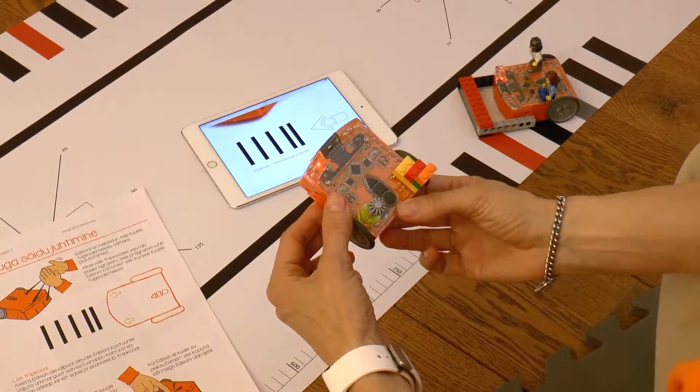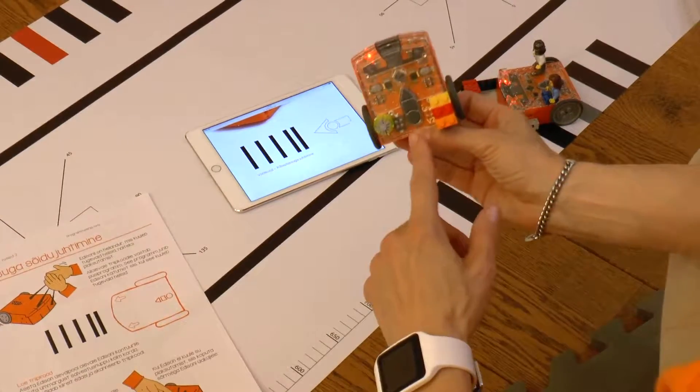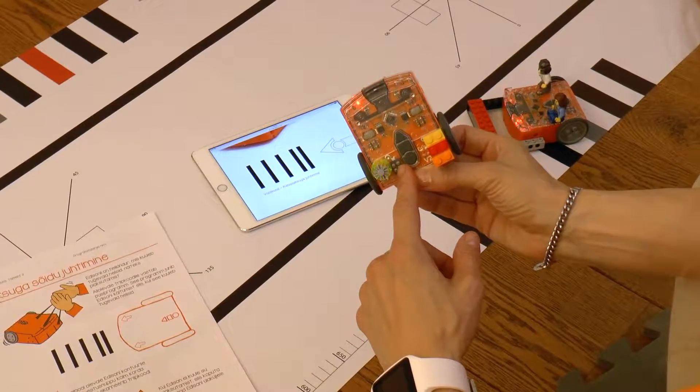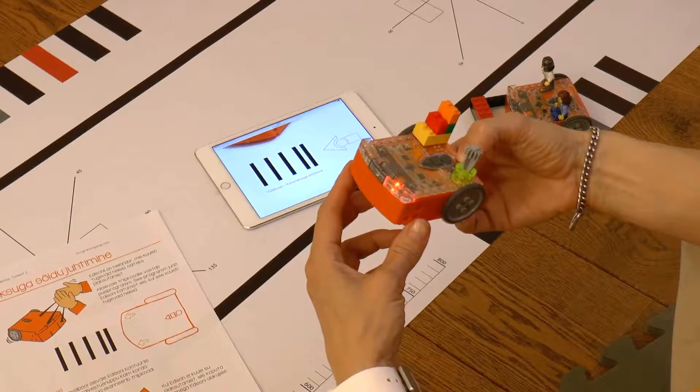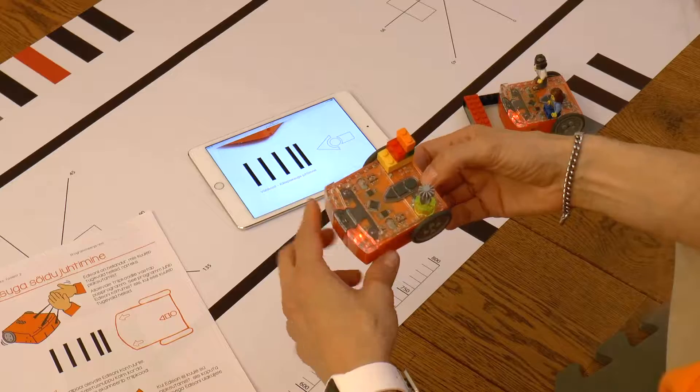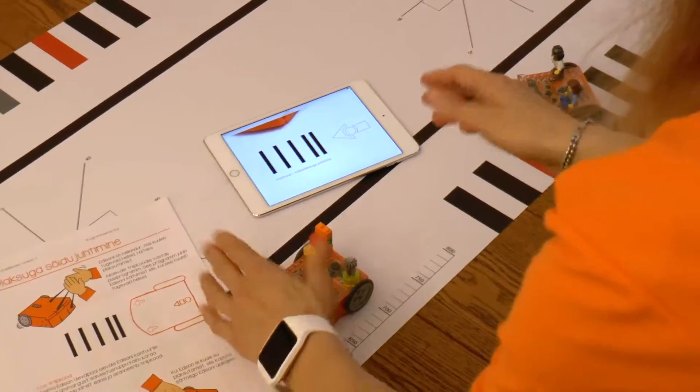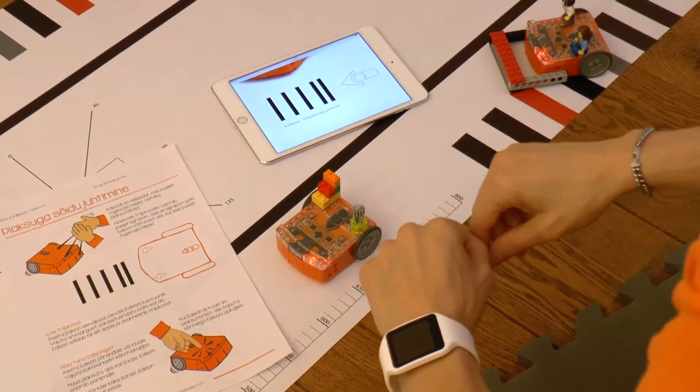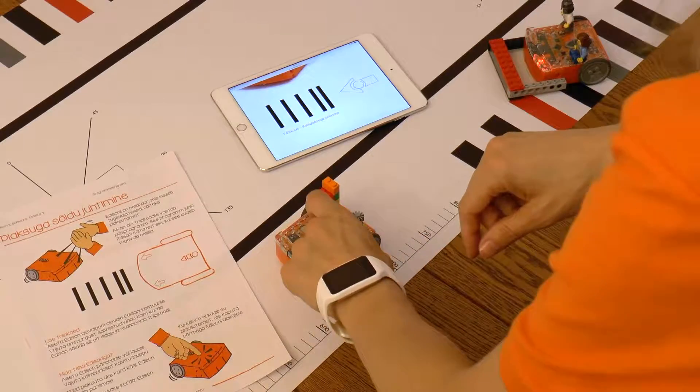As the first thing we will use Edison's hearing, for example its sound sensor, to give it commands by clapping. Its sound sensor is located here. If it's quiet in the room, Edison can hear claps well. If the room is noisy, then it's better to tap on Edison's cover.